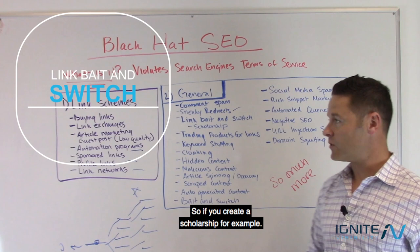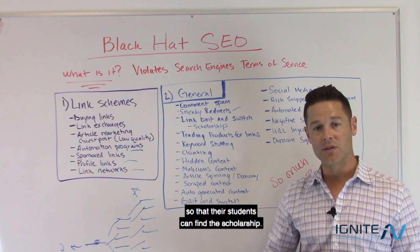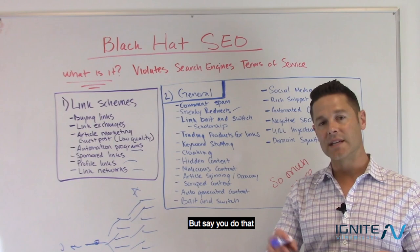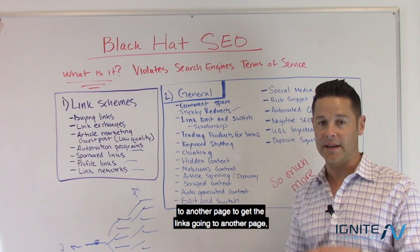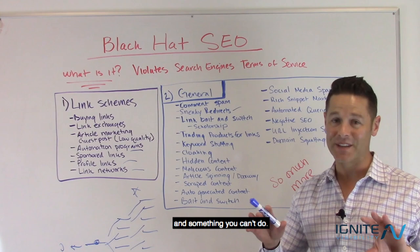Link bait and switch: say you create a scholarship and you're getting a whole bunch of links through it because educational institutions want to link to it so their students can find it. Then you 301 redirect that page to another page to transfer those links. That is also Black Hat SEO and something you can't do.